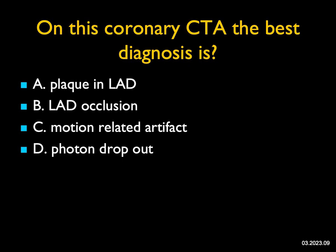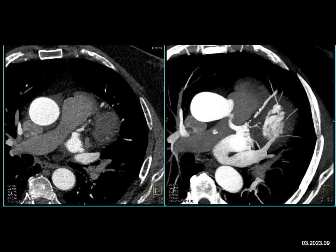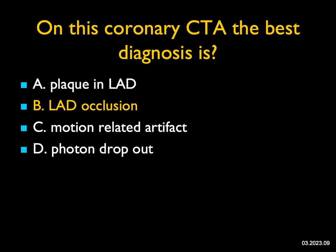On this coronary CTA, the best diagnosis — you're looking at the patient's LAD, which has calcified and non-calcified plaque, and especially in the proximal aspect of the vessel it looks like significant disease. There's no motion-related artifact and no photon drop-off. The LAD appears occluded, which is more than simply saying LAD plaque. That is indeed the right answer. This patient was eventually stented.